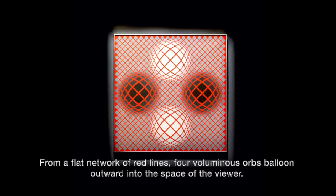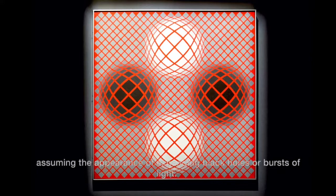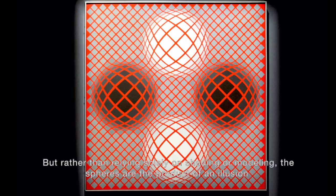From a flat network of red lines, four voluminous orbs balloon outward into the space of the viewer. Two white and two black, they are the polar ends of the gray checkerboard pattern that flows across the canvas, assuming the appearance of expanding black holes or bursts of light.